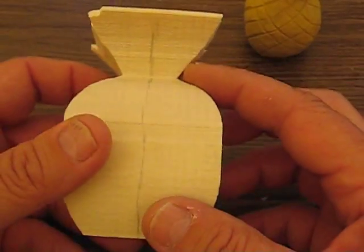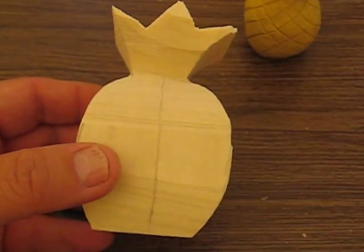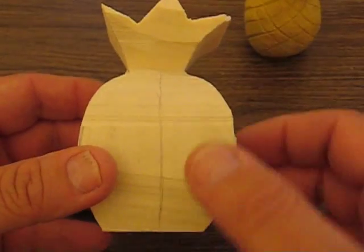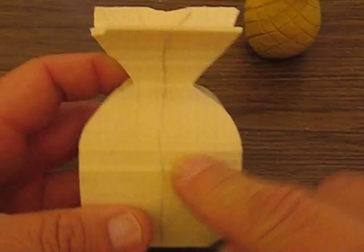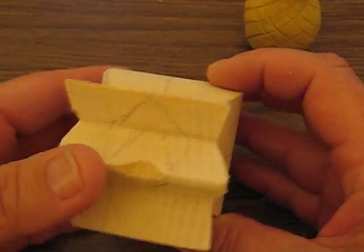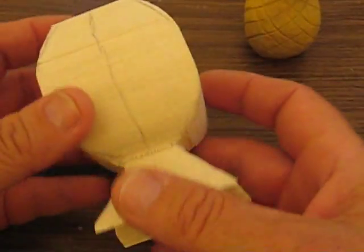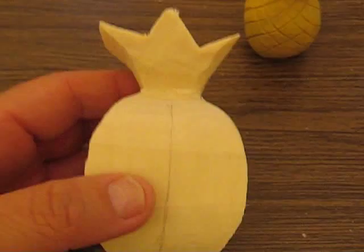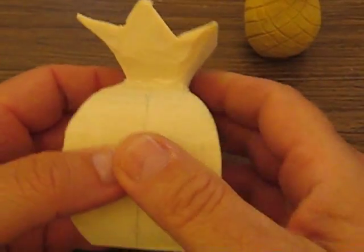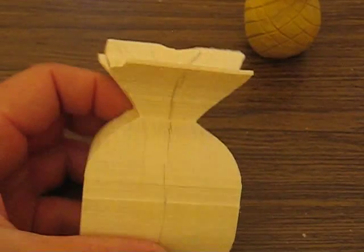Now what you want to do is you want to take your pencil and you want to draw a center line on the top and also on the bottom portion. You want to do all four sides. And when we come back on the next clip, we're actually going to start rounding off the top. We'll be right back.